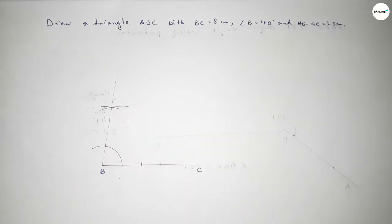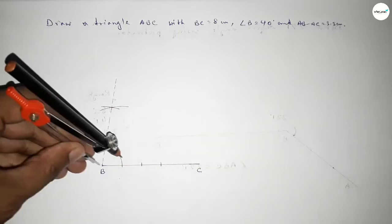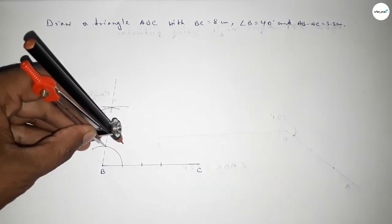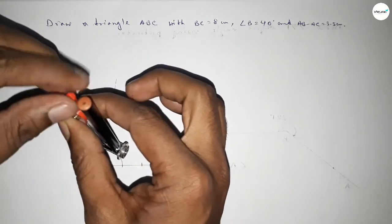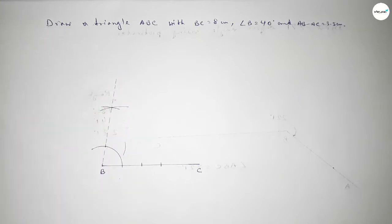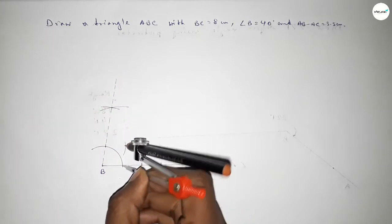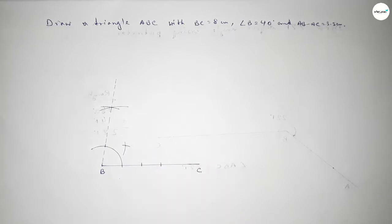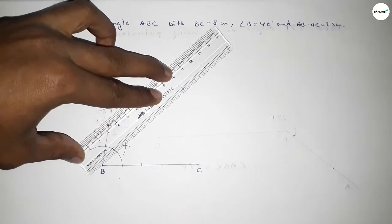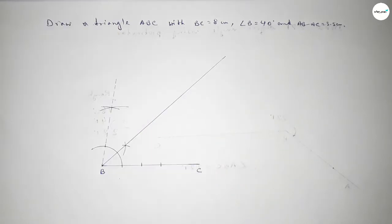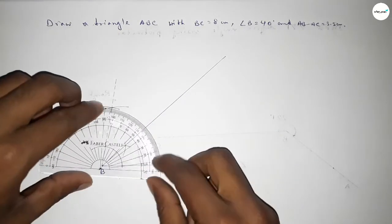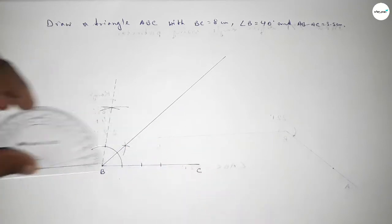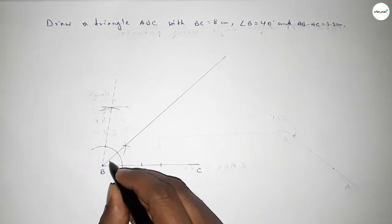Now bisecting the angle: taking the same length, putting the compass here and drawing an arc, again with the same length putting the compass here and cutting. Both curves intersect at a point. Joining this to get 40 degrees. Checking — this is perfectly 40 degrees.